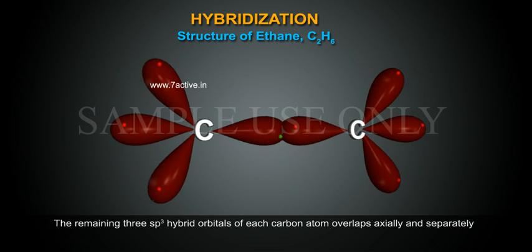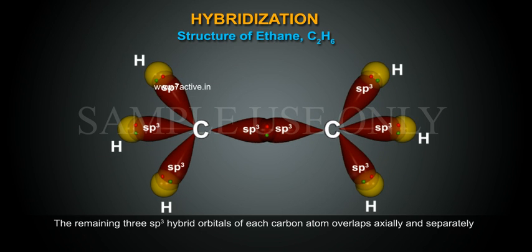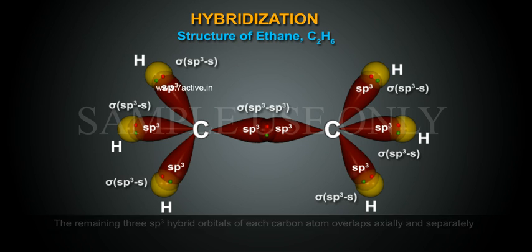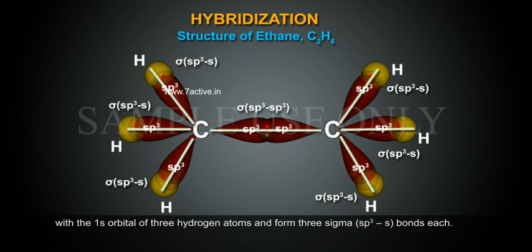The remaining three sp3 hybrid orbitals of each carbon atom overlap axially and separately with the 1s orbital of three hydrogen atoms and form 3 sigma sp3-s bonds each.